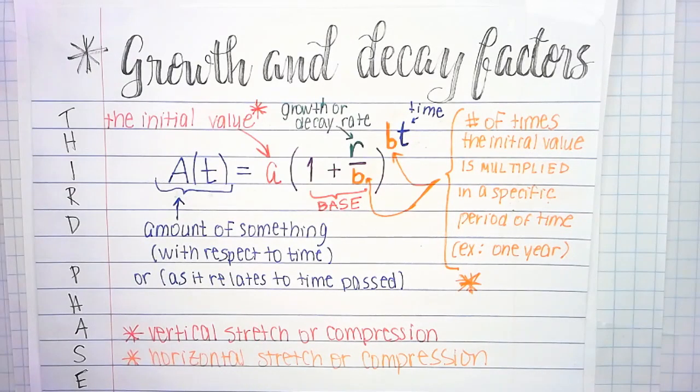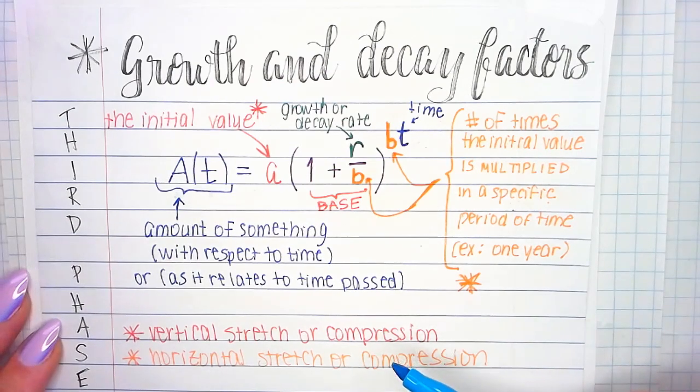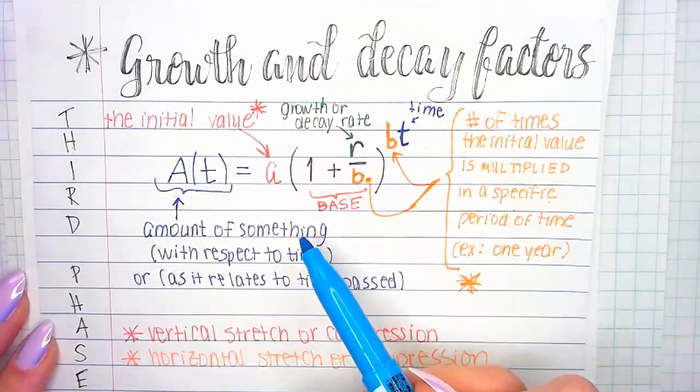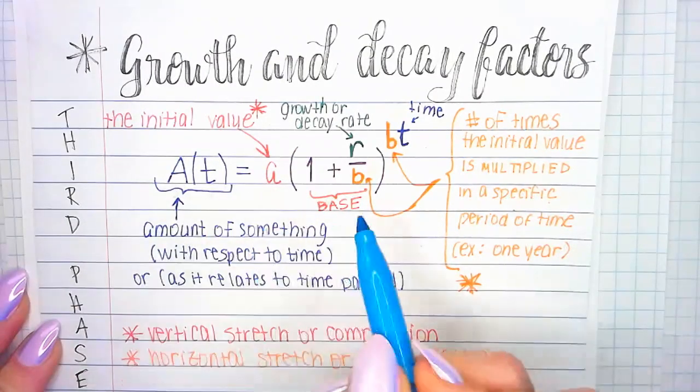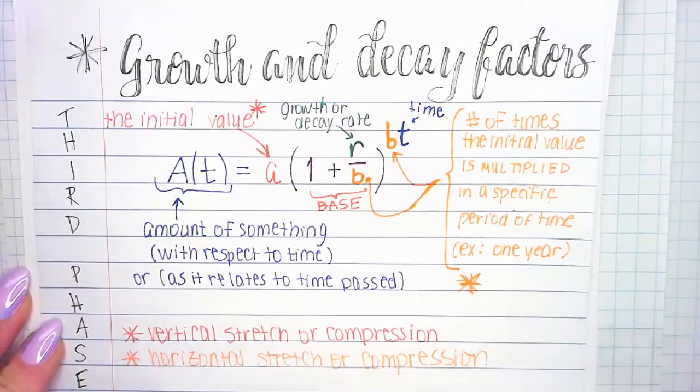We're going to talk a bit about the growth and decay factors, but we're also going to modify that original underlying structure of an exponential equation or an exponential function. You may remember in Algebra 1 doing some exponential word problems when you did maybe some type of a banking problem. You probably talked about interest rates or something like that. So it should be somewhat familiar.